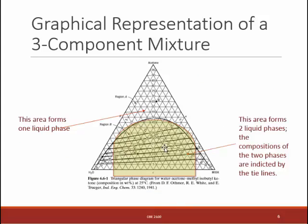All these extra features added to the graph — those crazy lines at an angle and a dome — are there because they're representing the phase equilibrium. The part out here represents a single liquid phase. The part under the dome represents two liquid phases. Anything fed in those ratios inside the dome is going to switch to two liquid phases — it's not going to stay like that. Those phases will separate out, and the tie lines across there are going to tell you what those compositions are.